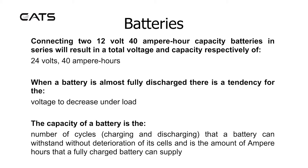Connecting two 12-volt, 40 ampere hour capacity batteries in series will result in a total voltage and capacity respectively of 24 volts and 40 ampere hours. When a battery is almost fully discharged, there is a tendency for the voltage to decrease under load.